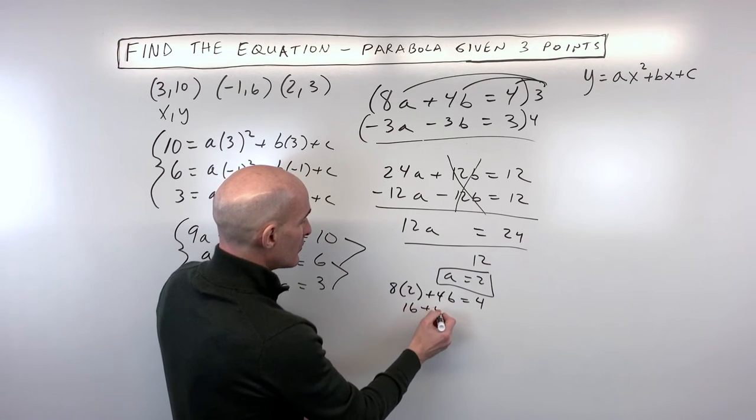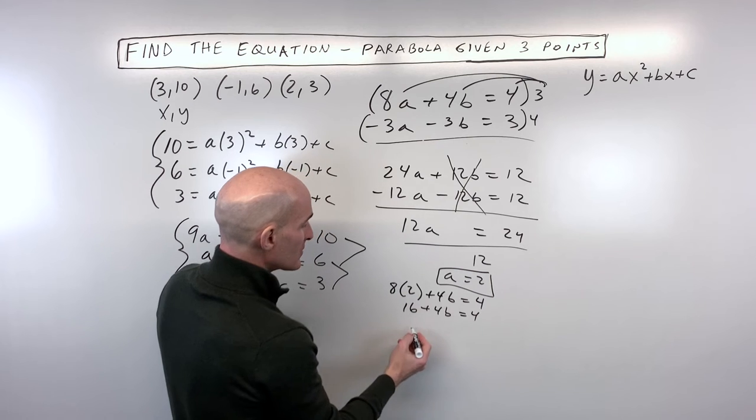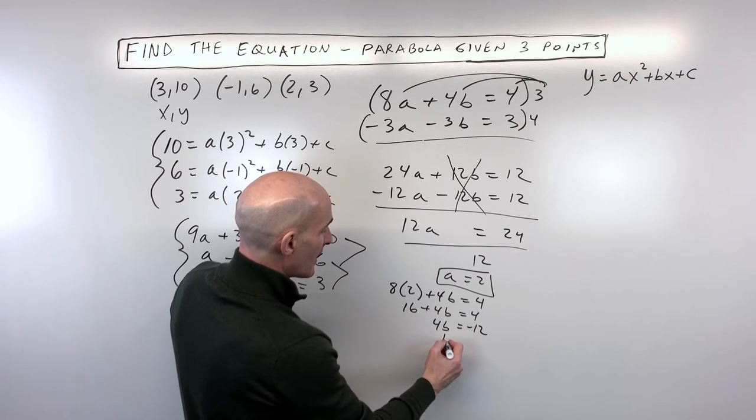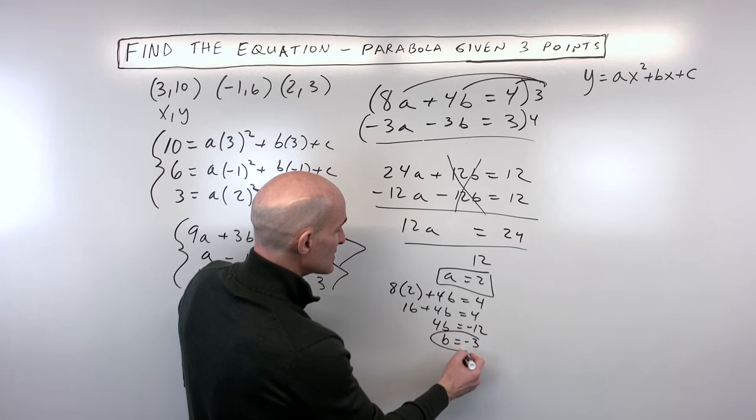plus 4b equals 4. So that's 16 plus 4b equals 4. Subtract 16 from both sides. That's negative 12 and divide by 4. You can see we're getting b is equal to negative 3.